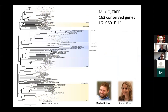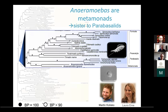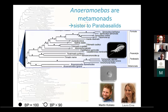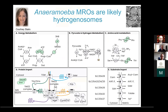Martin, Colisko, and Laura performed a phylogenetic multigene analysis, and they were able to place aneroamoeba using two different species. It turns out that aneroamoeba are metamonads and end up being a sister lineage to parabasalids. With this in mind, we were also interested in figuring out what their MROs are doing. Courtney Stairs found that aneroamoeba encodes proteins typically found in hydrogenosome-bearing organisms, providing the foundations for a syntrophic situation.